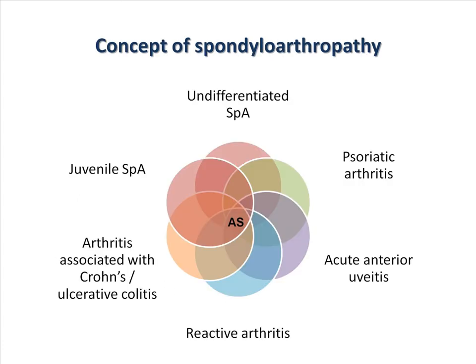Ankylosing spondylitis belongs to the family of spondyloarthritis, which includes other diseases such as psoriatic arthritis, acute anterior uveitis, reactive arthritis, arthritis related to inflammatory bowel disease, as well as juvenile spondyloarthritis. They all share a common genetic predisposition with the HLA-B27 gene.